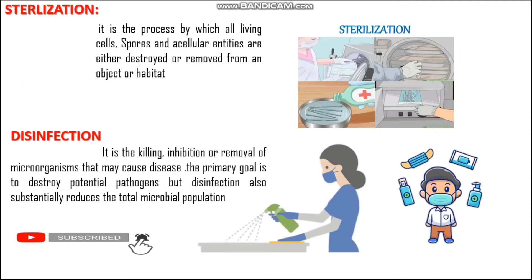The first term we are going to discuss is sterilization. Sterilization is the process by which all living cells, spores, and acellular entities are either destroyed or removed from an object or habitat. While going through the definition, some people may have doubts about what spores and acellular entities are.